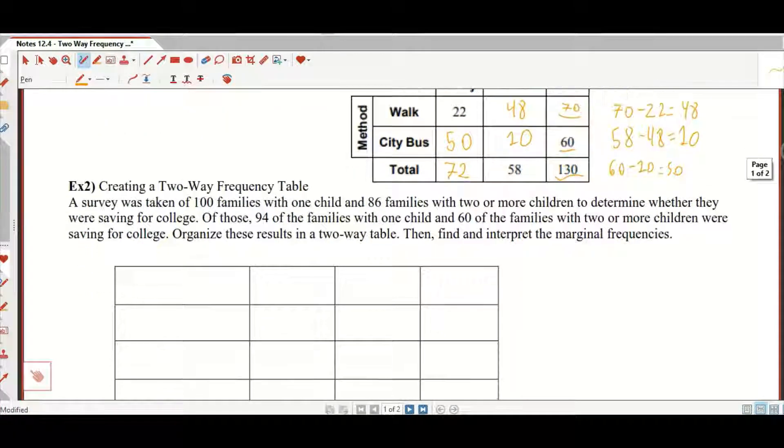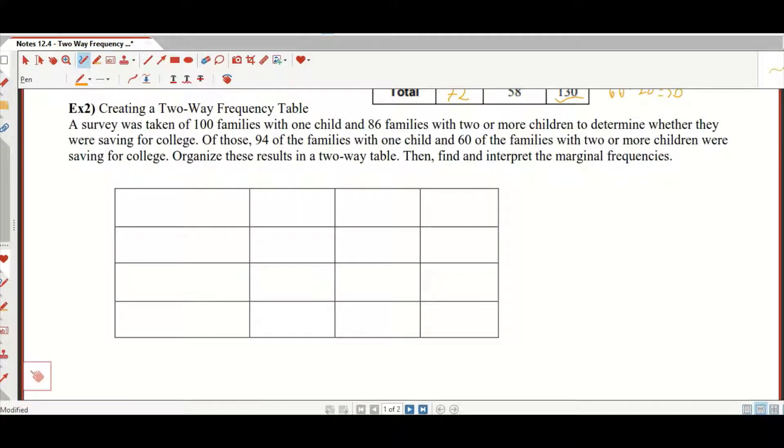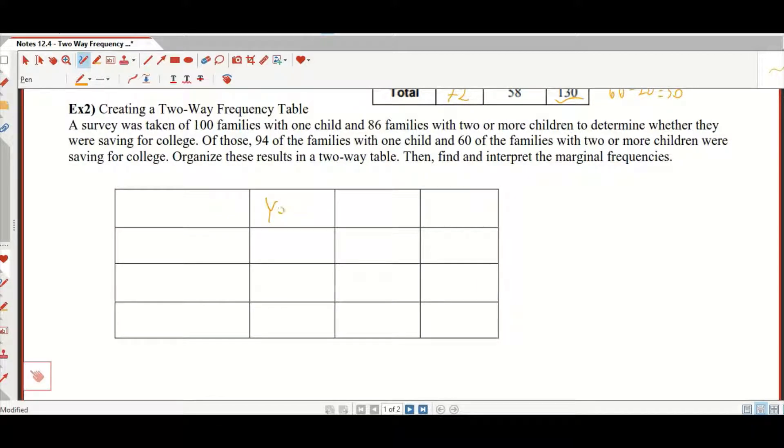So let's create a two-way frequency table, our very own. A survey was taken of 100 families with one child and 86 families with two or more children to determine whether they were saving for college. Of those 94 of the families with one child and 60 of the families with two or more children were saving for college, organize these results in a two-way table. Then find and interpret the marginal frequencies. To make the rest of this easier, here's how we're going to do it. We're going to say saving for college, yes. Saving for college, no. And a total. And this one, we're going to go one child. This one, more than one child. This one, the Gruffalo's child. Just kidding. Total.